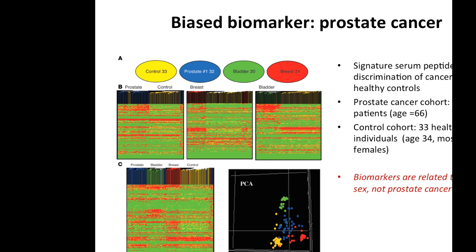In contrast, this paper is an example of a very biased biomarker. The authors tried to develop a serum peptide signature to discriminate cancers from healthy states. For prostate cancer, they had a cohort of about 30 male patients with an average age of 66, and controls were 33 healthy individuals with an average age of 34 — much younger and mostly female. The biomarkers they claimed to develop were related to age and sex, but not prostate cancer at all.